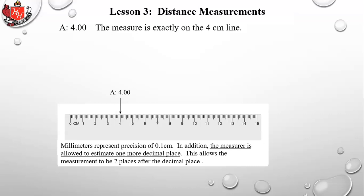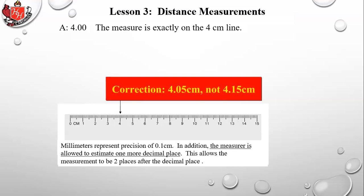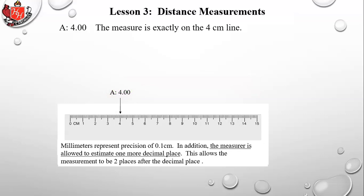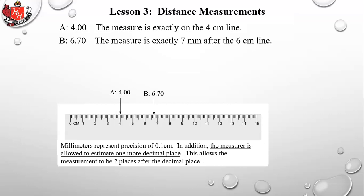For example, if a line points exactly at 4 cm, you don't just record '4' — you must record the correct precision. You might write 4.00. If the line is between 4.0 and 4.1, you could estimate 4.15. This last digit is the 'estimate digit' (sometimes called the guess digit) — you're allowed to estimate that final place.